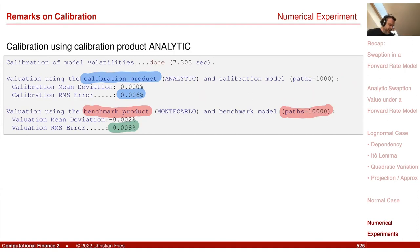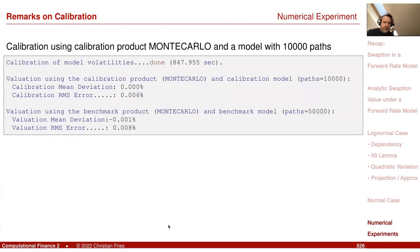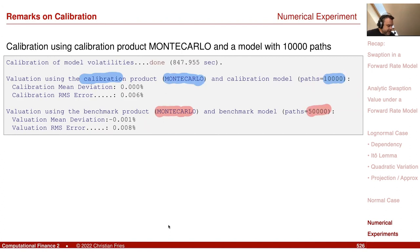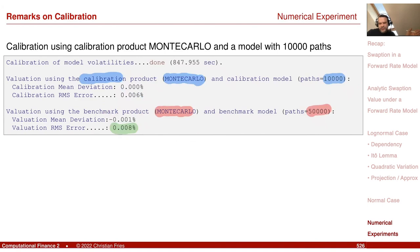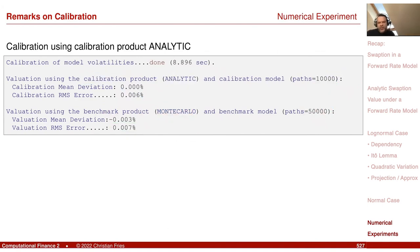The impression that the analytic formula had a large error in the earlier slides was only due to the Monte Carlo simulation itself having a large numerical error. Calibrating with Monte Carlo using 10,000 paths and benchmarking with 50,000 paths gives a similar error of about 0.08%, suggesting our analytic formula is approximately as good as a Monte Carlo with 10,000 sample paths. You can see the analytic formula has a small approximation error, but it is quite good. That's it for today.